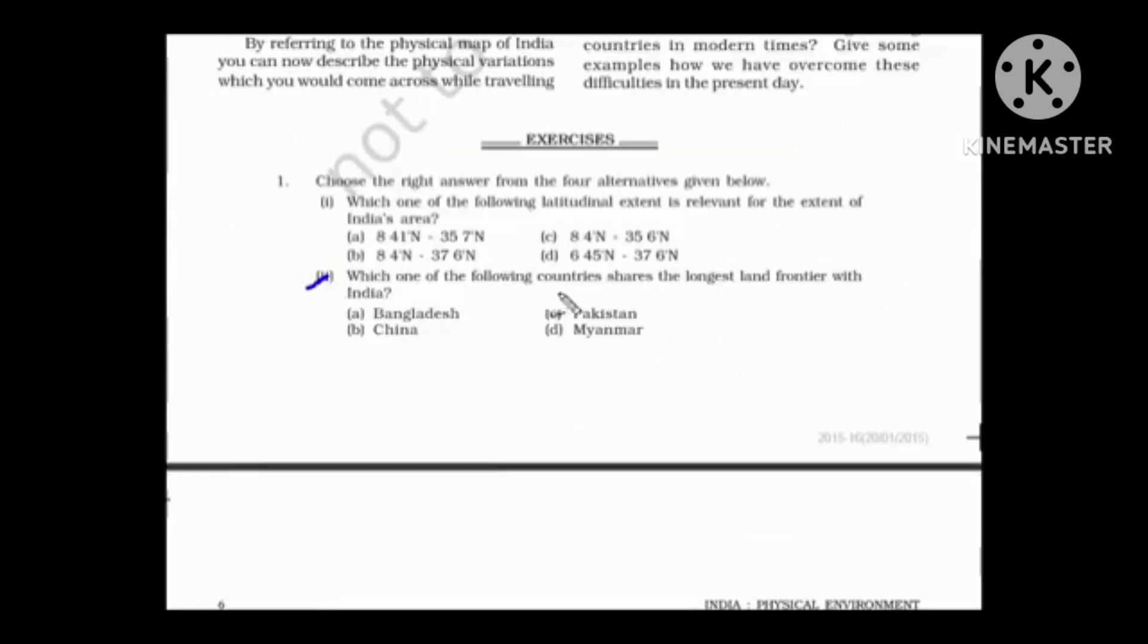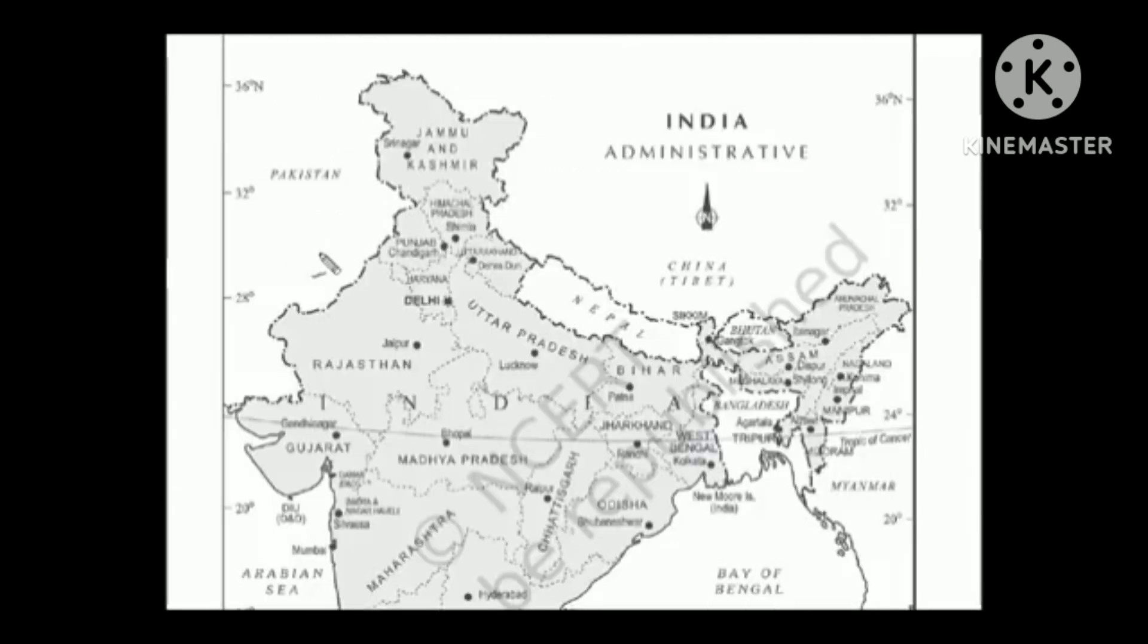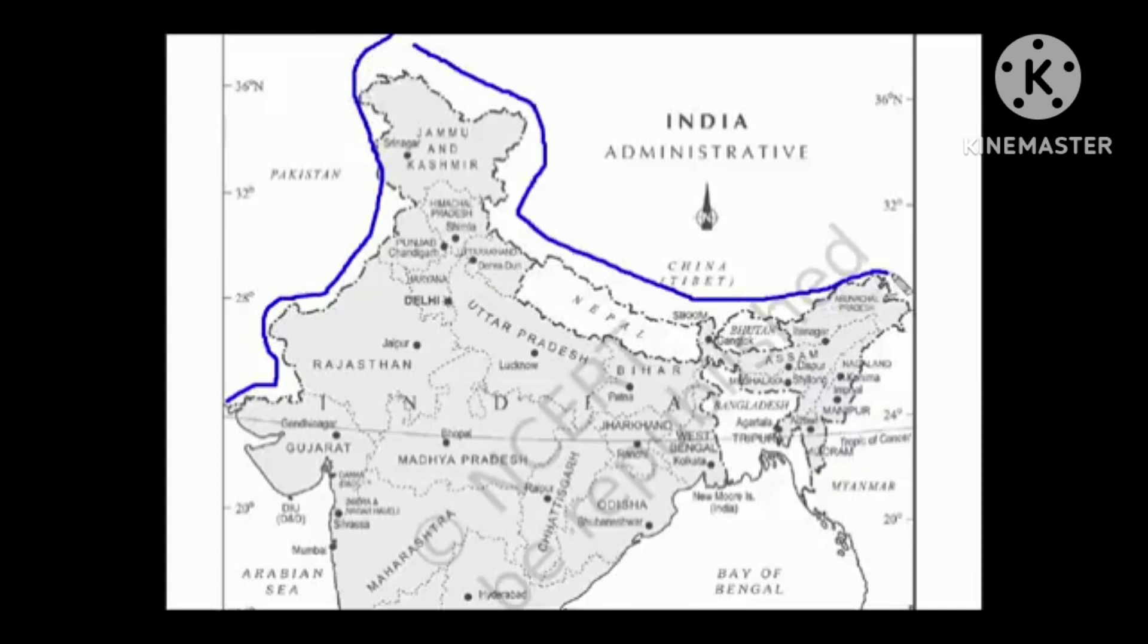Second question. Which one of the following countries share the longest land frontier with India? So we are talking about the longest border shared with India. The answer is China. Have a look at this map. The Pakistan boundary is this much and look at China's boundary, this is huge. The others are very smaller. So the first one is China and then Pakistan.